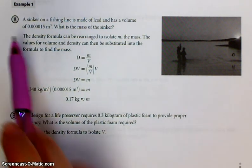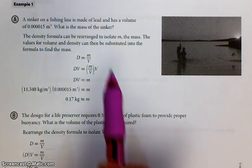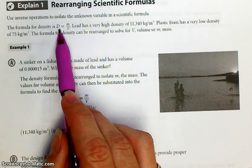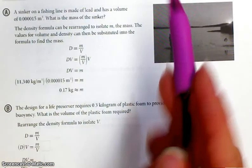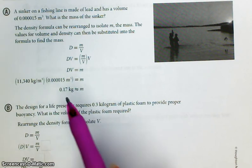Here's an example. A sinker on a fishing line, usually made of lead, is made of lead and has a volume of 0.000015 cubic meters. What is the mass of the sinker? So we need to take our original formula, density equals mass divided by volume, and we need to solve it for mass because we're asked down here to find mass.